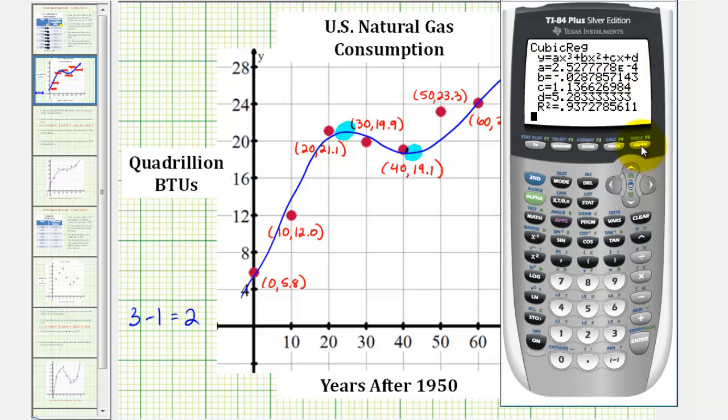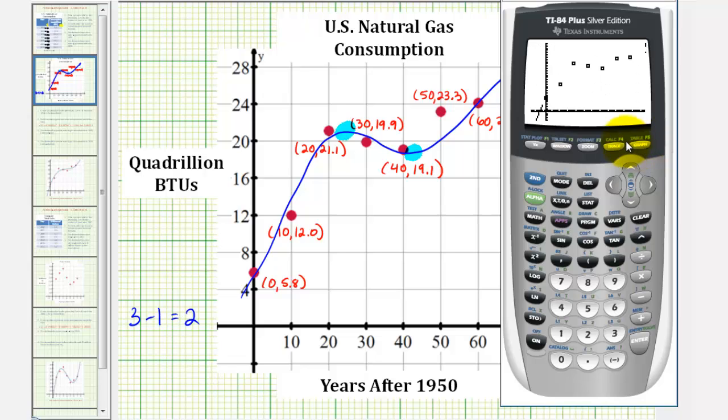If we press GRAPH, we can see the graph of the model on top of the scatter plot. And you can see it's not a perfect fit, but it is a decent fit for the given data.